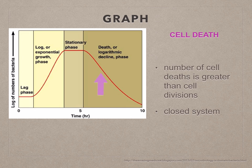Finally, the last phase is the death or logarithmic decline phase. The number of cell deaths exceeds divisions here, and this only occurs in a closed system.